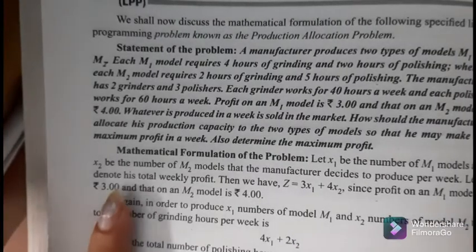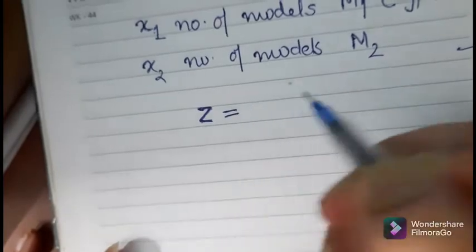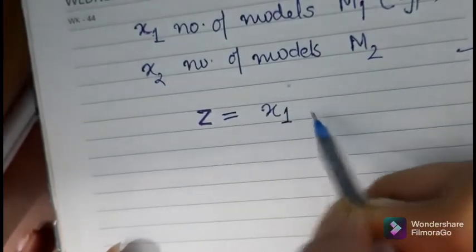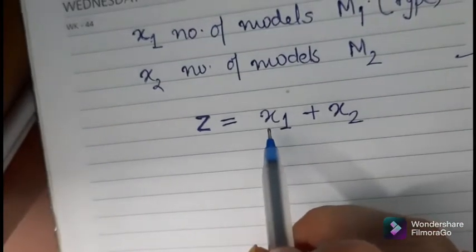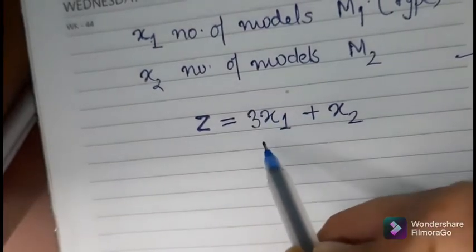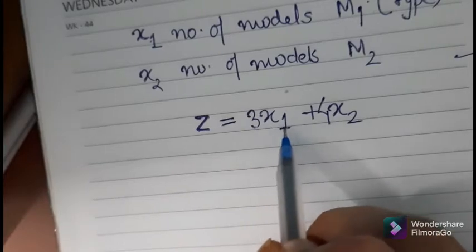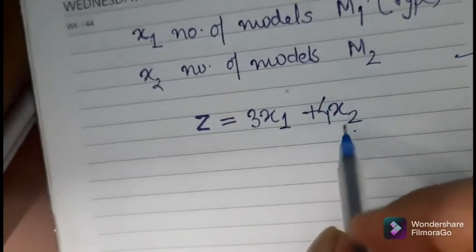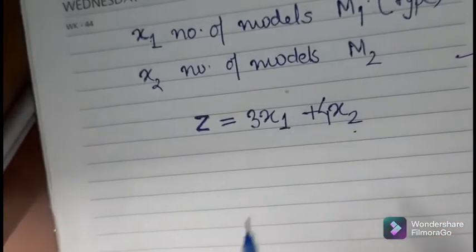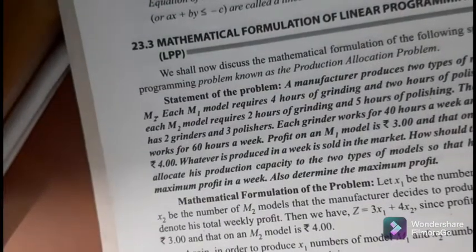Let Z denote the total weekly profit. We consider Z as the objective function. The objective function is formed as: the profit for M1 is rupees 3 and for M2 is rupees 4. So if he produces 10 models of M1 he earns 30 rupees, and if he produces 5 models of M2 he earns 20 rupees — total 50 rupees. That is why the objective function becomes Z = 3X1 + 4X2.